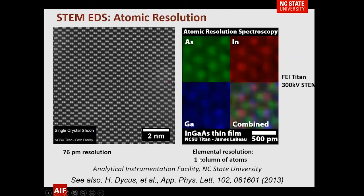Looking at current technology — referencing a paper from NC State in 2013 — with our Titan TEM and four-quadrant detectors, you can achieve atomic resolution: one column of atoms resolution for EDS analysis.